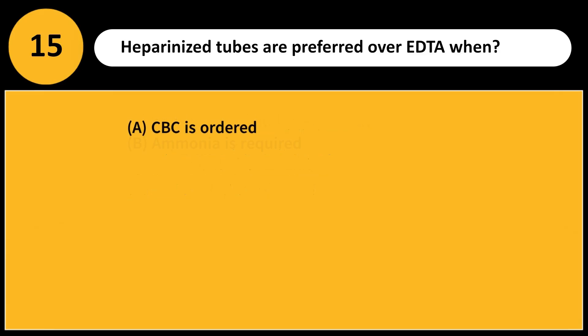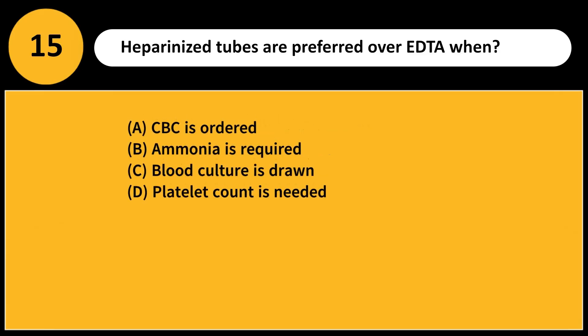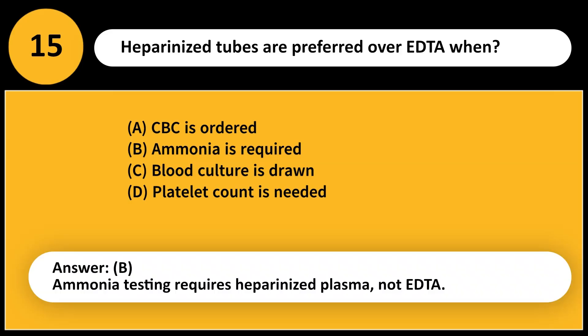Heparinized tubes are preferred over EDTA when? A. CBC is ordered. B. Ammonia is required. C. Blood culture is drawn. D. Platelet count is needed. Answer: B. Ammonia testing requires heparinized plasma, not EDTA.